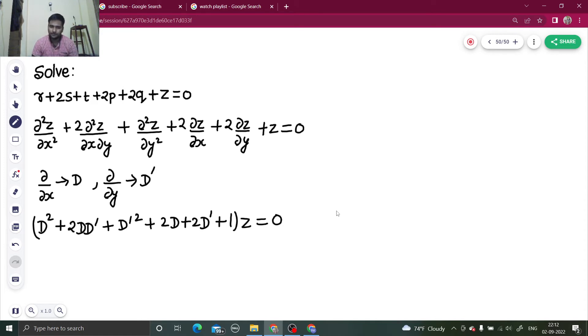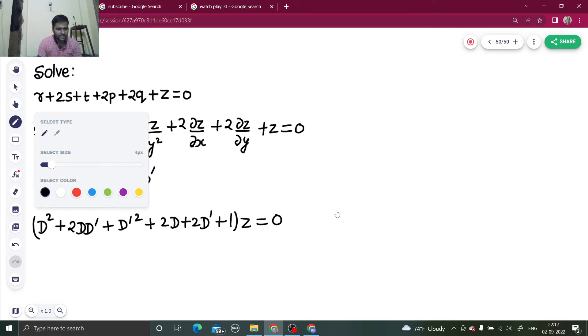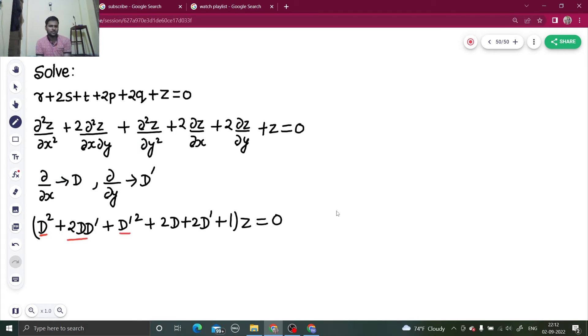Then we will compare to D minus m D dash minus a, from there find the value of a and m, then write the complementary function. So how can we do this? Look at the terms which I am showing you: this term, this term, and this term. What will they make? a square plus 2ab plus b square.